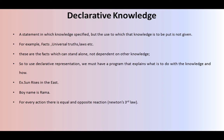Now what is the meaning of declarative knowledge? Declarative knowledge normally specifies the knowledge, but the use to which that knowledge is to be put is not given. A statement in which knowledge is specified but the use to which that knowledge is to be put is not given. The best examples for this kind of knowledge are universal truths, facts, and laws. These are facts which can stand alone, not dependent on other knowledge — they are standalone declarative knowledge.